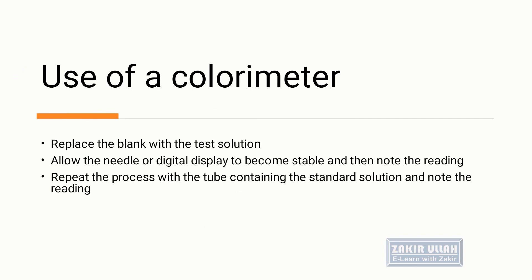Now remove the blank and place the test solution or standard solution in the sample holder. Take the reading with the help of the galvanometer or digital display and note the reading when the needle becomes stable or the digital display gives you the reading. After that, repeat the process with the tube containing the standard solution and note the reading.